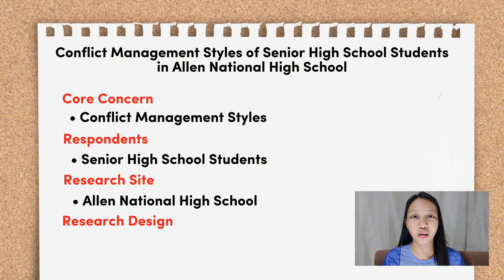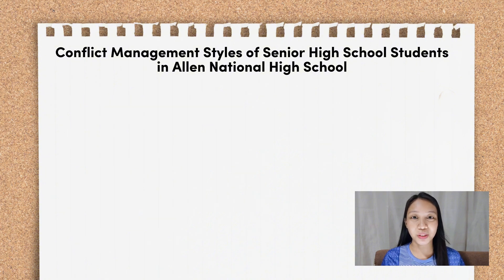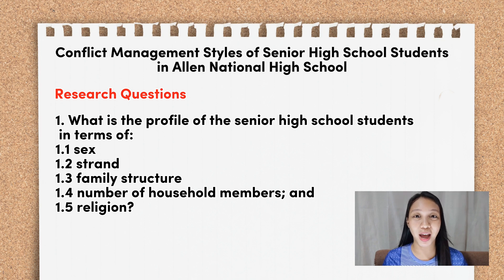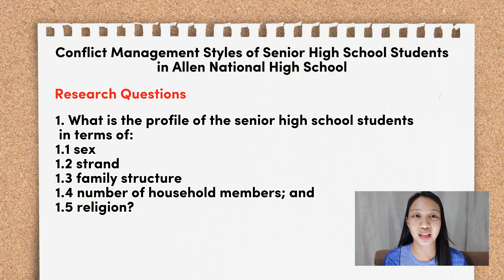This is an example of a descriptive research. The research questions are as follows. First, what is the profile of the senior high school students in terms of: 1.1 sex, 1.2 strand, 1.3 family structure, 1.4 number of household members, and 1.5 religion. These sub-variables were chosen by the researchers because they assumed these sub-variables could affect the conflict management styles of the senior high school students.